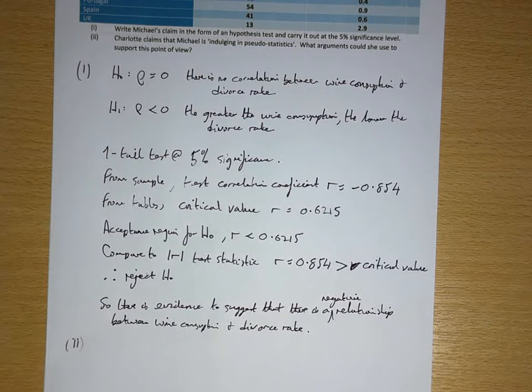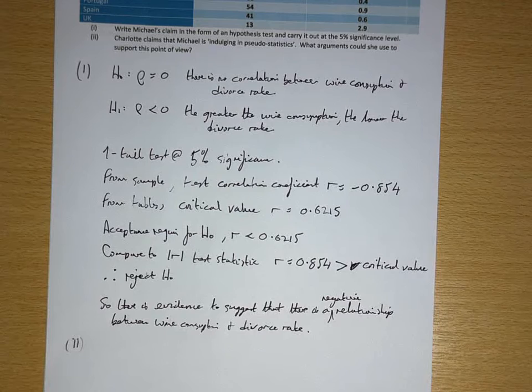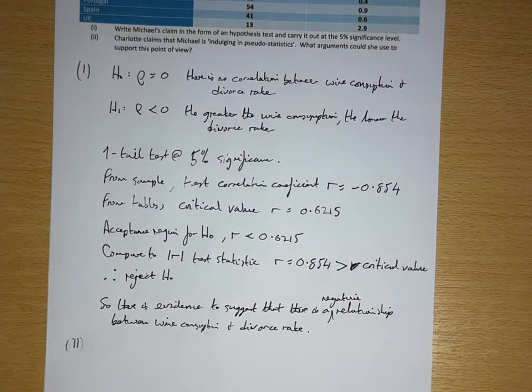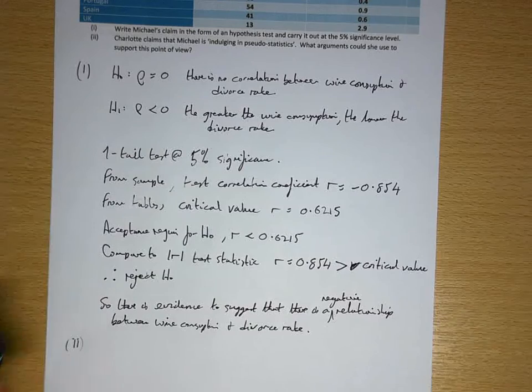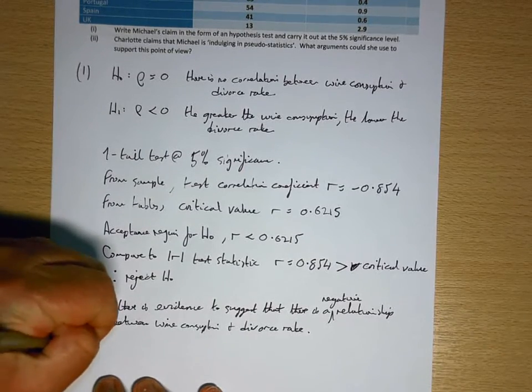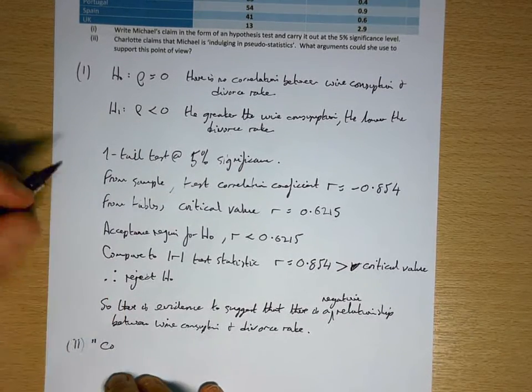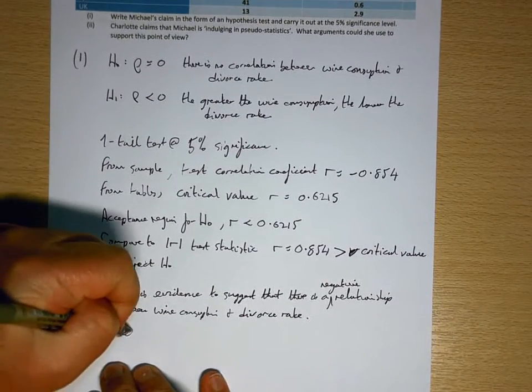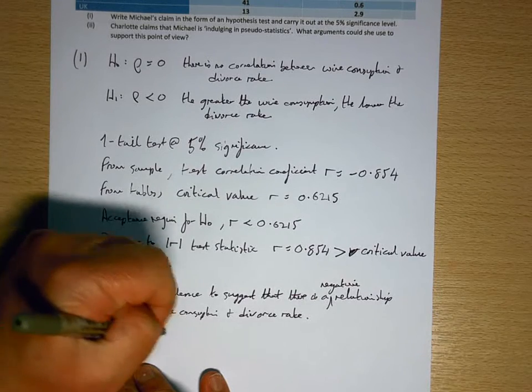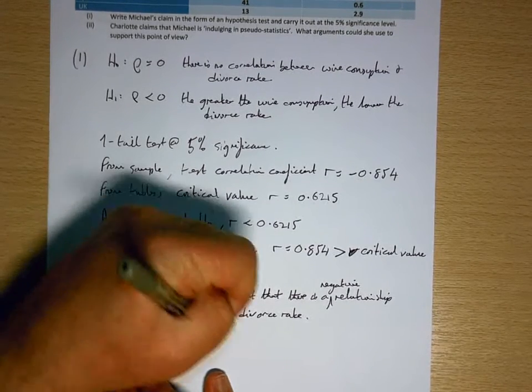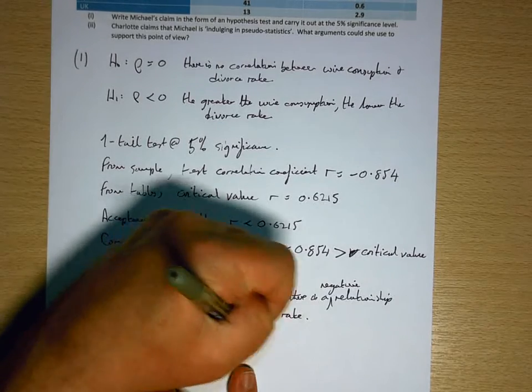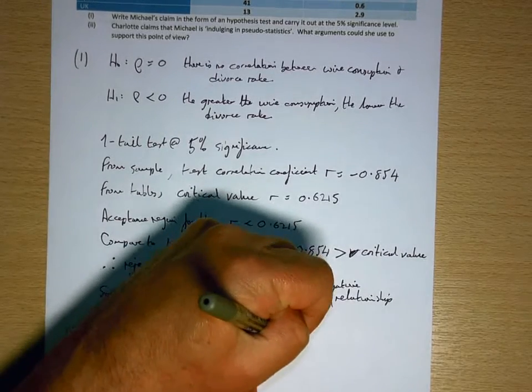Well, as we'll see when we look at some of the graphs following this question, what they're looking for here is for you to say that correlation does not imply causation.